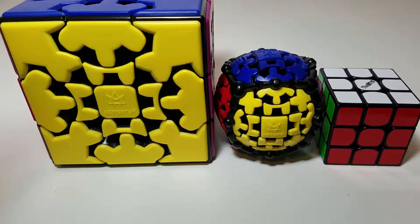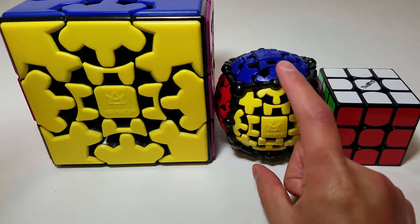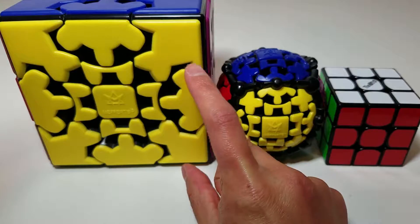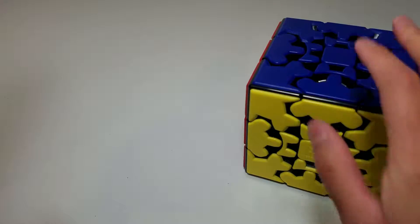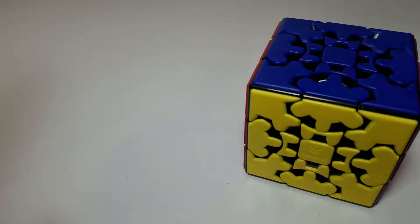And here's a little bit of a size comparison. You can see that the gear ball is just a little over half as tall as the gear cube. This gear cube is also the same size as the Rubik's light.